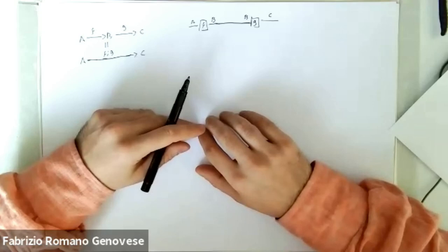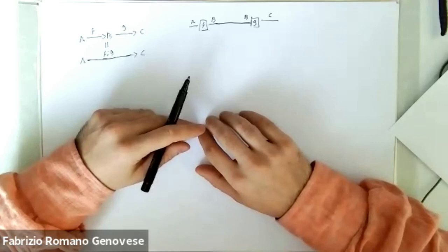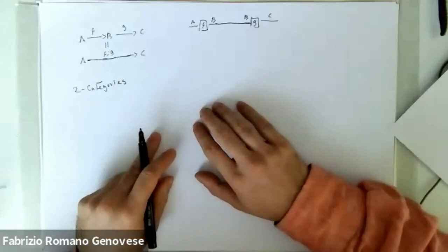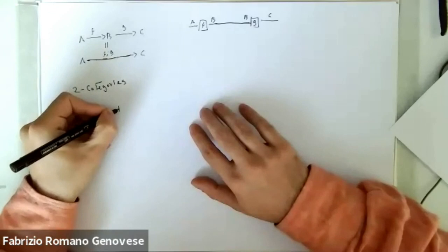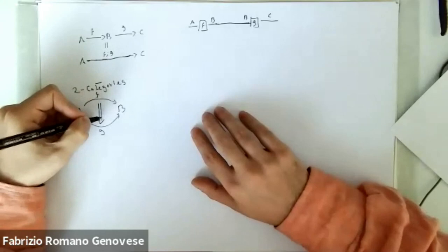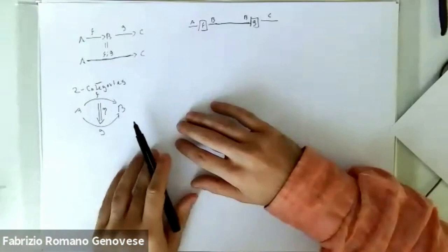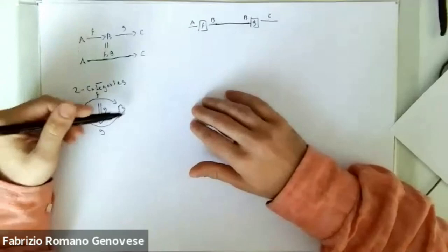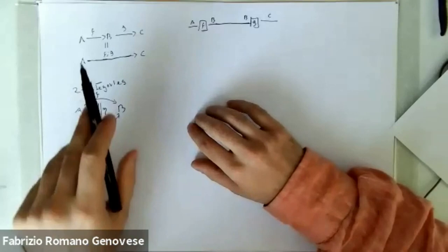Now let's try to do something more complicated: two-categories. Two-categories are categories that have morphisms between morphisms. We have objects A, B, morphisms between them, and then morphisms between morphisms. There are obviously a lot of axioms to formalize this concept well, but the main idea is literally that we don't have just morphisms between objects, but morphisms between morphisms as well.